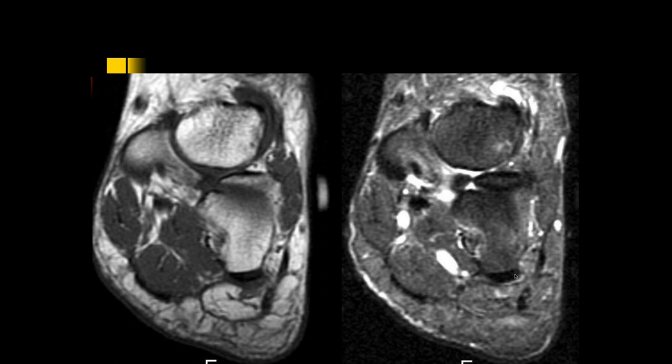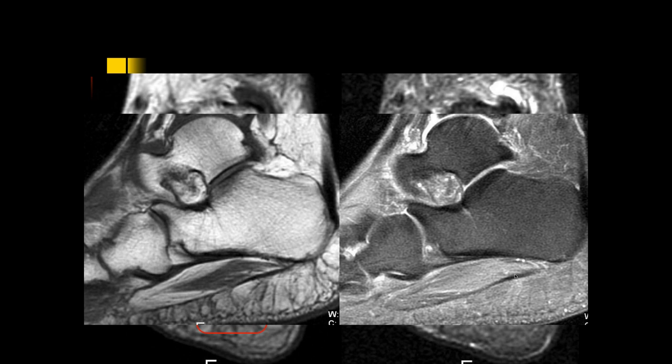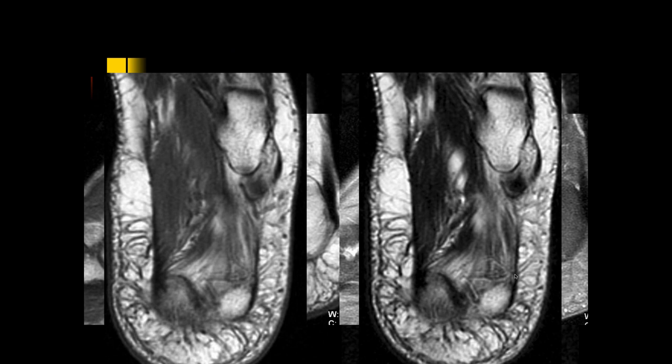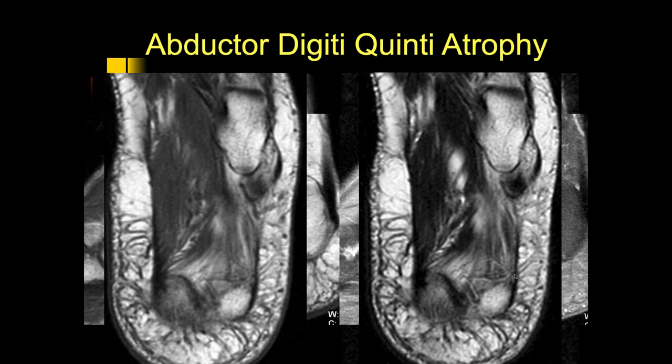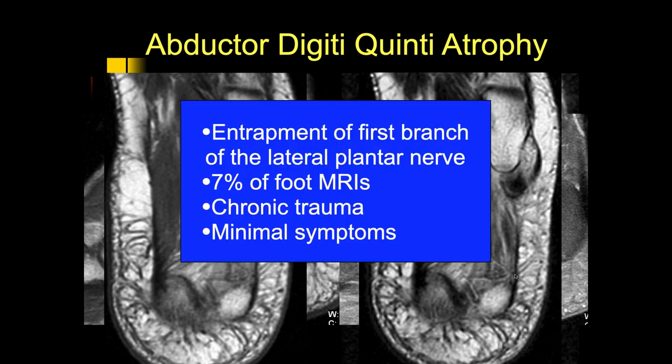There's quite a bit of atrophy of the abductor digiti minimi here, and here's what it looks like on the sagittal images — you can see the fatty atrophy, fatty replacement. It's pretty focal; the other intrinsic muscles look normal. This is focal atrophy of the abductor digiti quinti muscle, thought to be due to entrapment of the first branch of the lateral plantar nerve — Baxter's nerve.